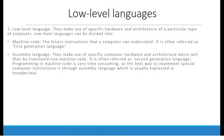Low-level languages make use of specific hardware and architecture of a particular type of computer. They can be divided into machine code — the binary instructions that a computer can understand, often referred to as first-generation language — and assembly language, which makes use of specific computer hardware and architecture and is then translated into machine code, often referred to as second-generation language.